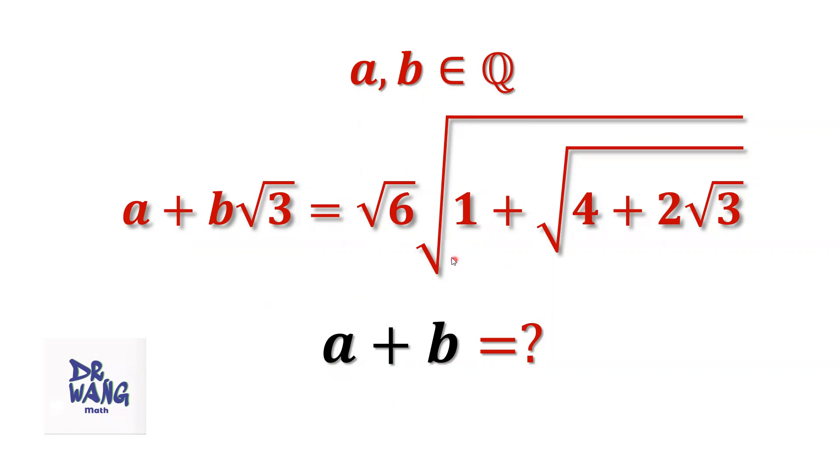We simplify the right-hand side first. The right-hand side is nested square roots.